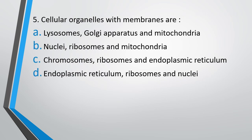Question number 5. Cell organelles with membranes are: lysosome, Golgi apparatus and mitochondria, nuclei, ribosomes and mitochondria, chromosome, ribosomes and endoplasmic reticulum, endoplasmic reticulum, ribosomes and nuclei. Cell organelles with membranes are. Correct answer is Option A, that is lysosomes, Golgi apparatus and mitochondria.